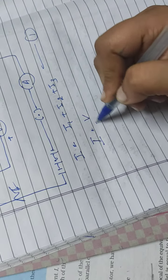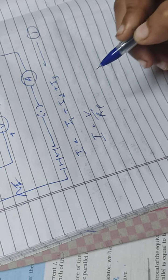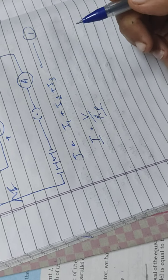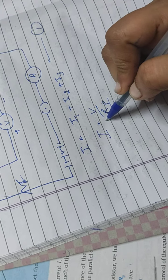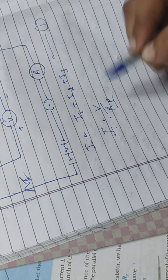Ohm's law says I equal to V by Rp. Rp is the resistance in parallel. So Ohm's law says I equal to V by Rp.